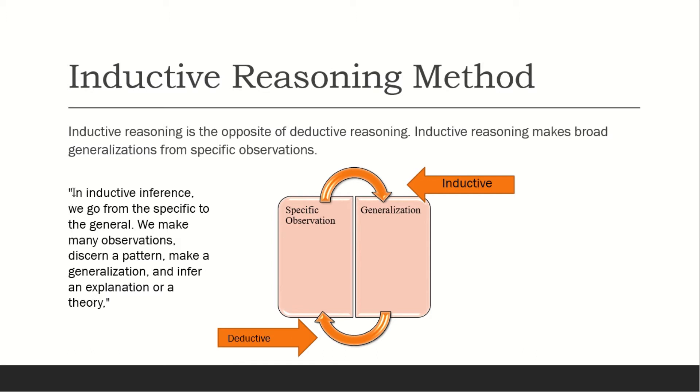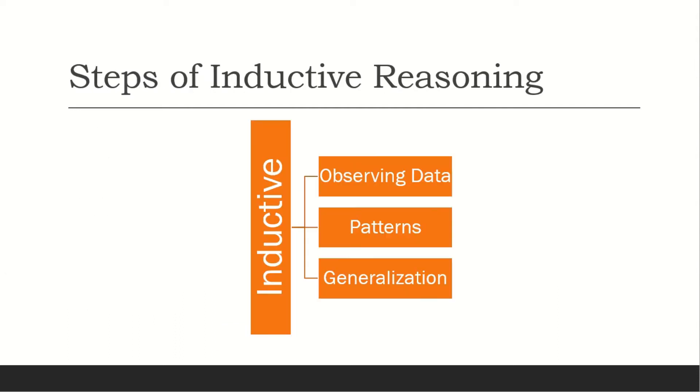So data is converted into an explanatory form, a theoretical form, in the inductive method. For example, the steps are: first observing data, patterns, and generalization. However, in deductive reasoning: generalization, examination, and conclusion or experiment.